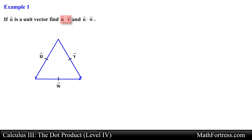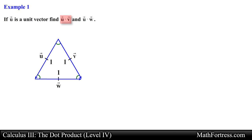According to the problem, u is a unit vector, which means it has a magnitude equal to 1. This also means that vector v and vector w also have a magnitude equal to 1, since they form the sides of an equilateral triangle and all sides have the same length. Recall from elementary geometry that an equilateral triangle has three congruent angles, each measuring 60 degrees, so the angle between these vectors is going to be equal to 60 degrees.